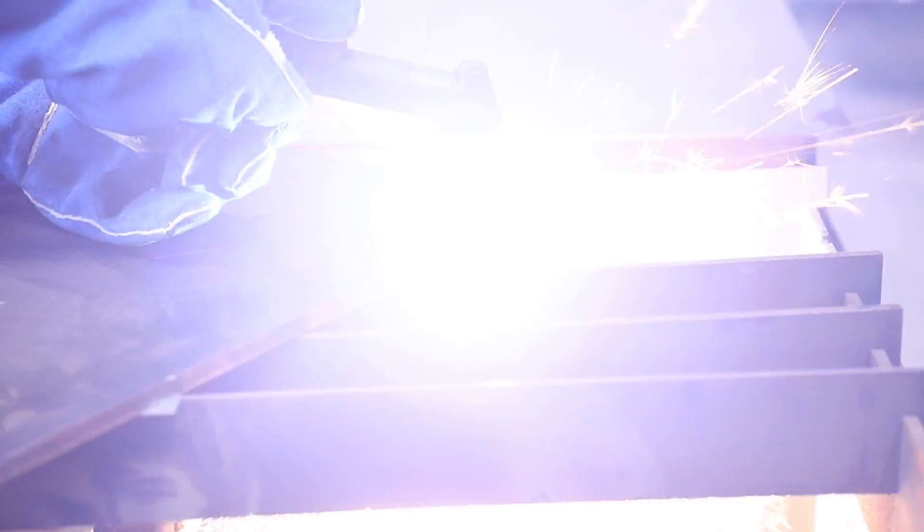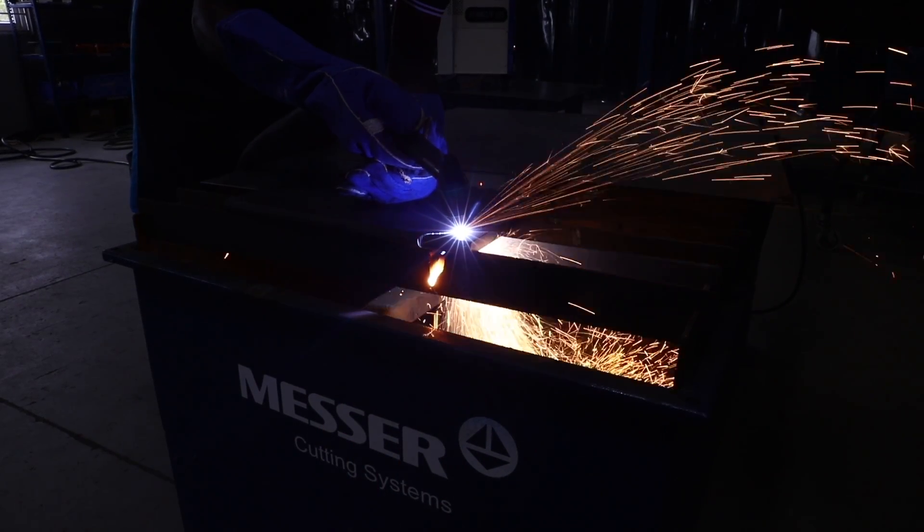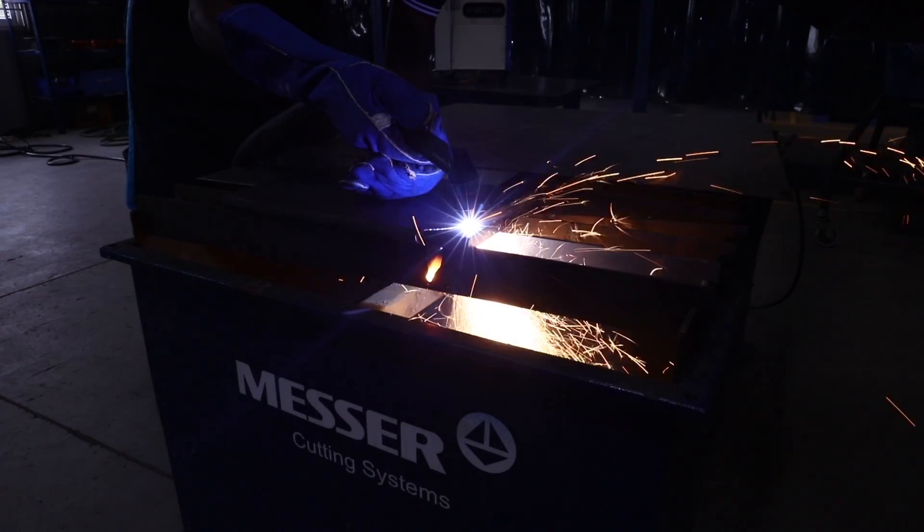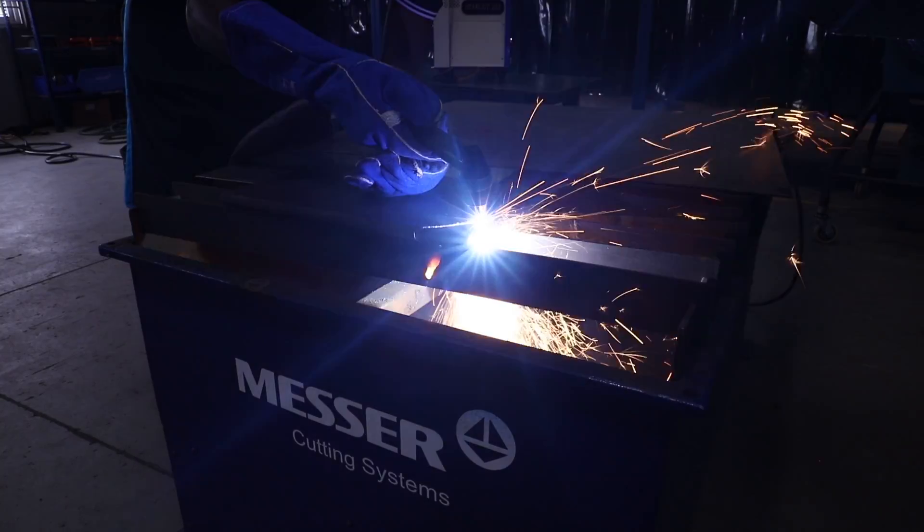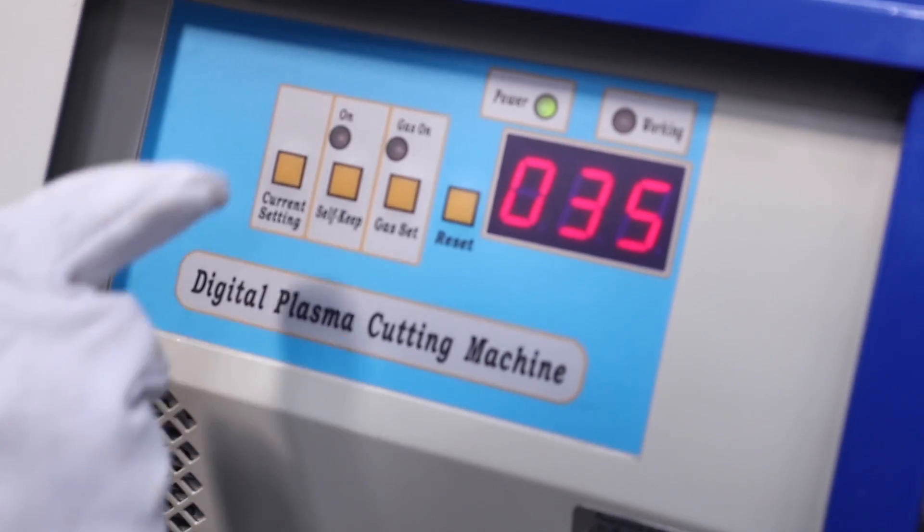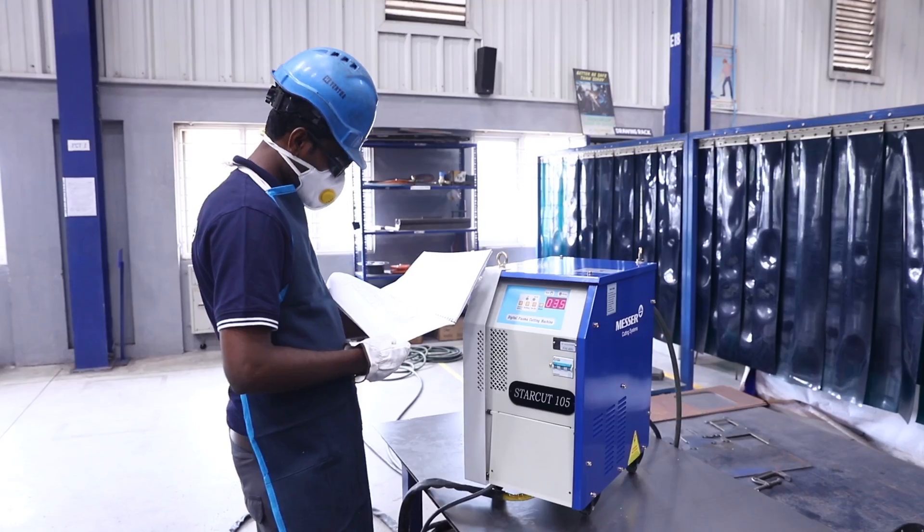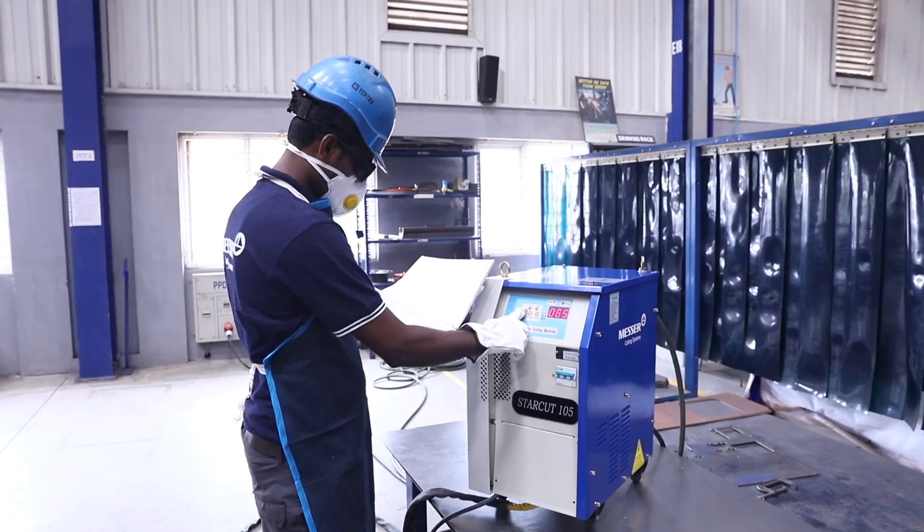65 can perform a pierce cut of 9mm and edge cut of 20mm. 105 can perform a pierce cut of 16mm and edge cut of as big as 50mm. StarCut operates in four different amperages of 35, 65, 85 and 105. The user manual highlights all this information.